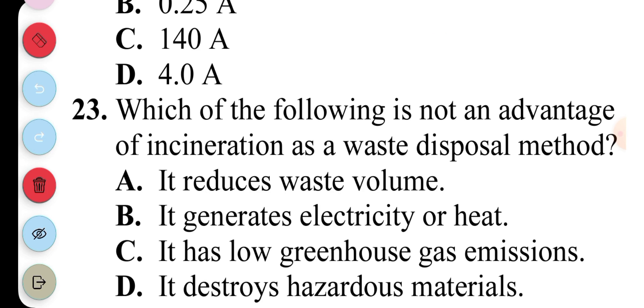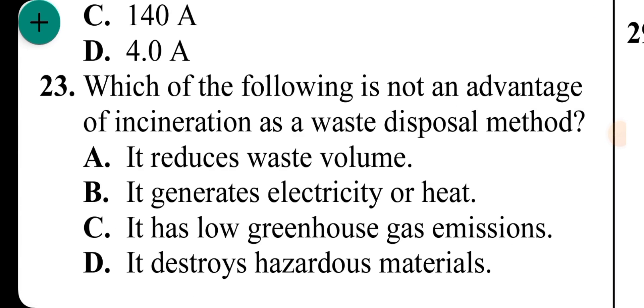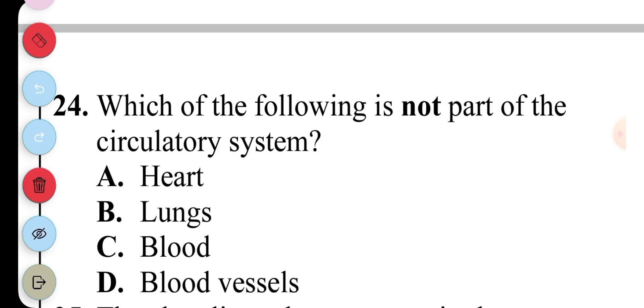Question 23: The following is not an advantage of incineration as a waste disposal method: A. It reduces waste volume, B. It generates heat or electricity, C. It has low greenhouse gas emissions, D. It destroys hazardous materials. So the answer to question 23 is C, It has low greenhouse gas emissions. Question 24: Which of the following is not part of the circulatory system? The lungs is not part of the circulatory system, it's part of the respiratory system.